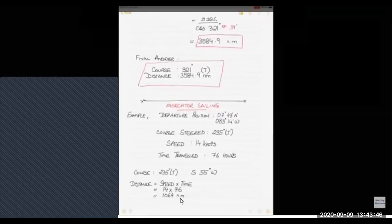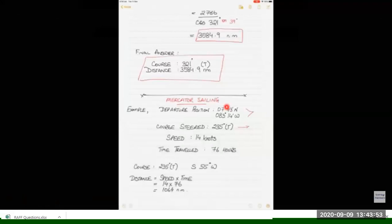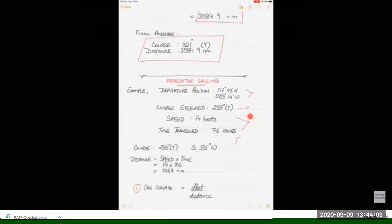Now let's see the second question. It is the departure or the initial position from where we are departing: 07 degrees 43 minutes north and 083 degrees 14 minutes east.